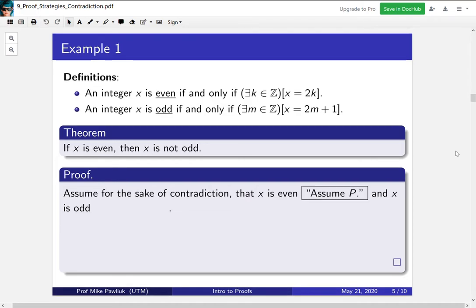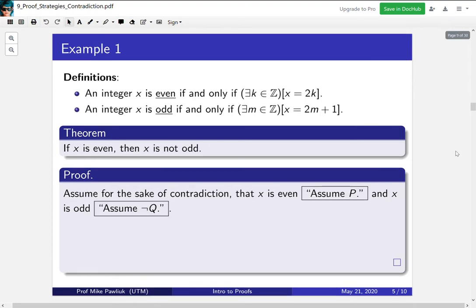So x is even is the "assume P" part, and x is odd is the "not Q" part, right? It's not "not odd", therefore it's odd. Now we need to make a series of logical steps that will lead us to a contradiction.